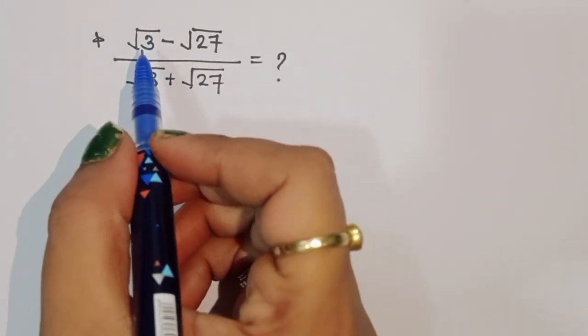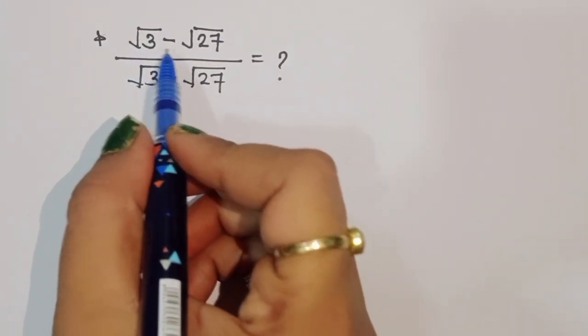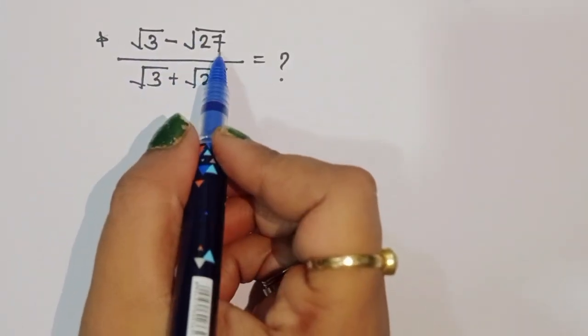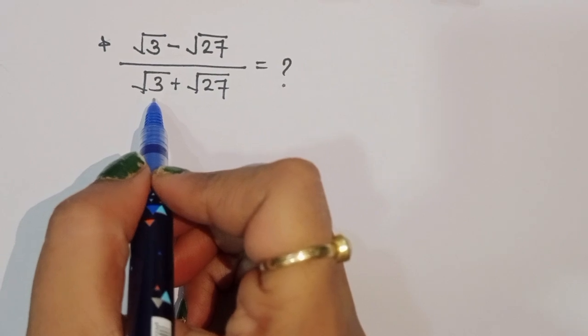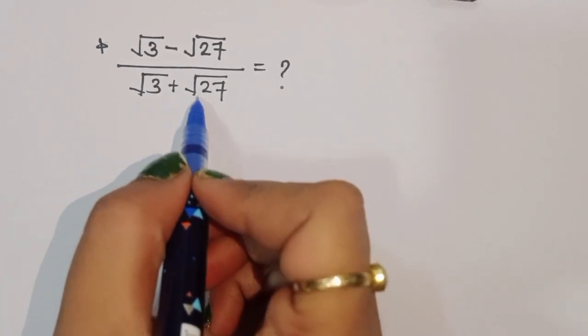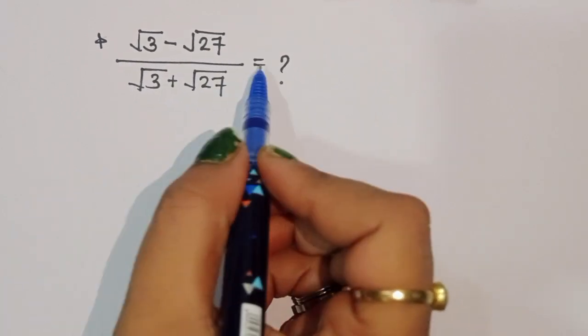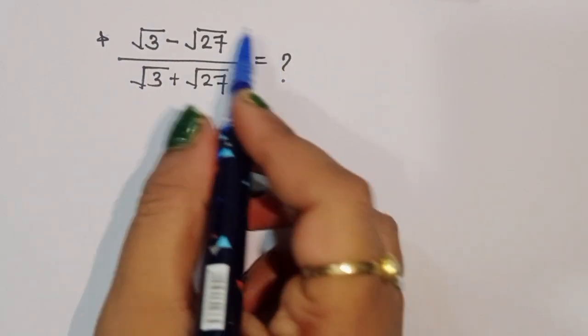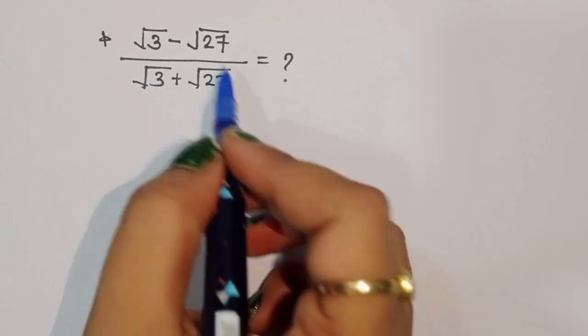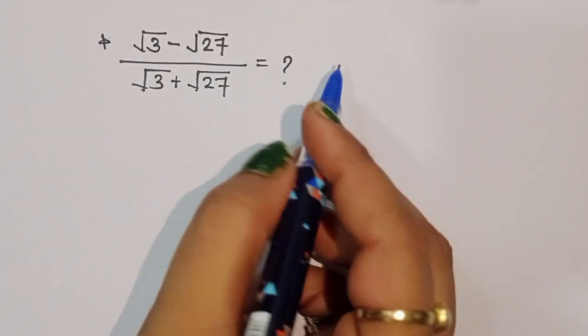The question is: given square root of 3 minus square root of 27, divided by square root of 3 plus square root of 27, is equal to what? We have to find out this value. Let's see how we can find it.